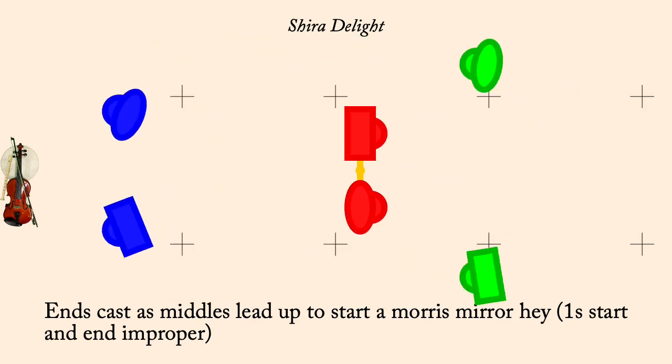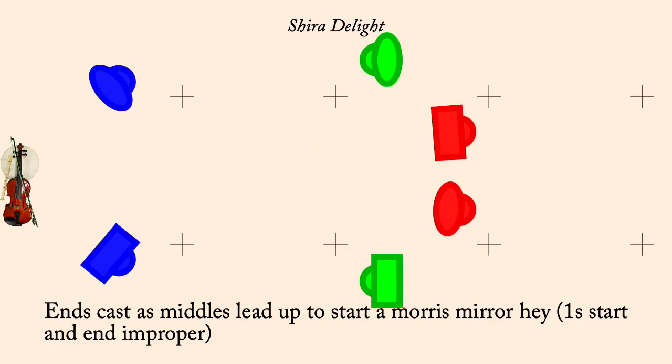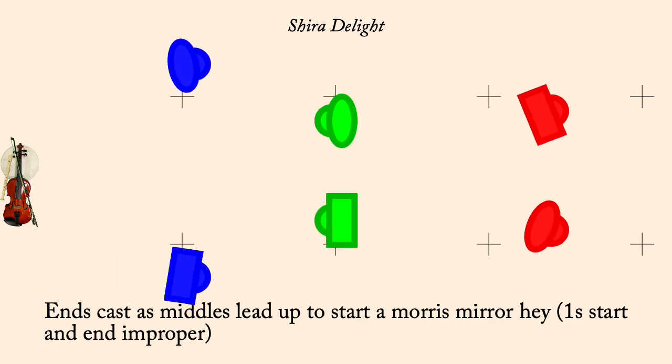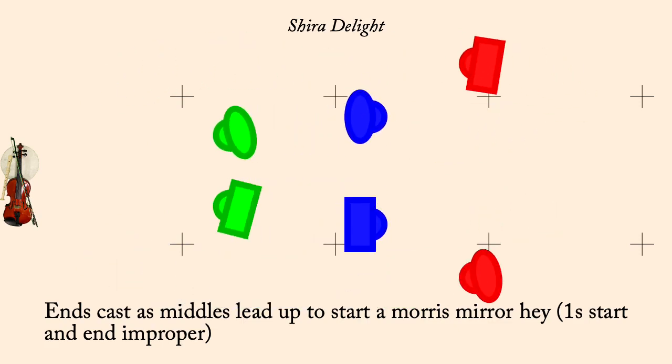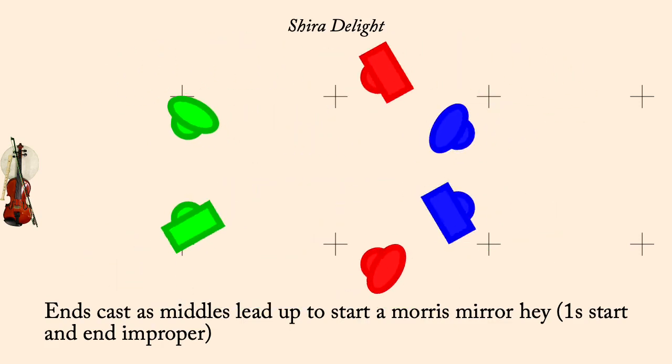Ones left turn person on right diagonal, right turn their partner, ones two-hand turn half.